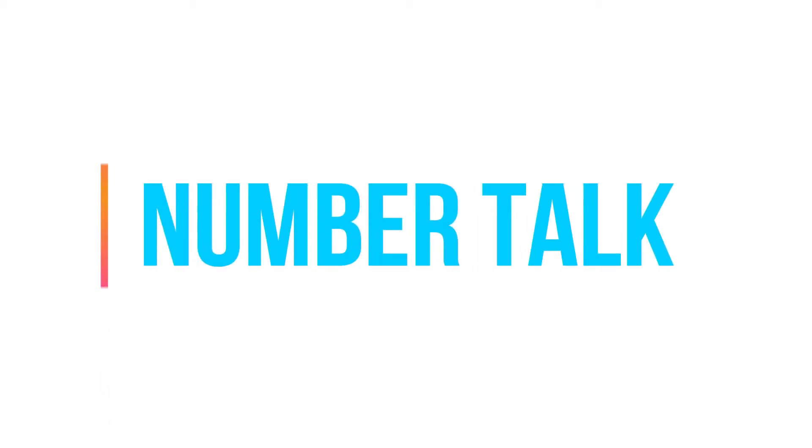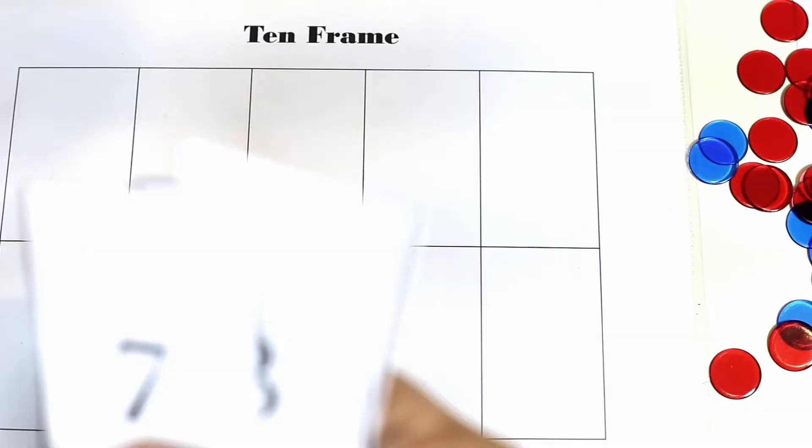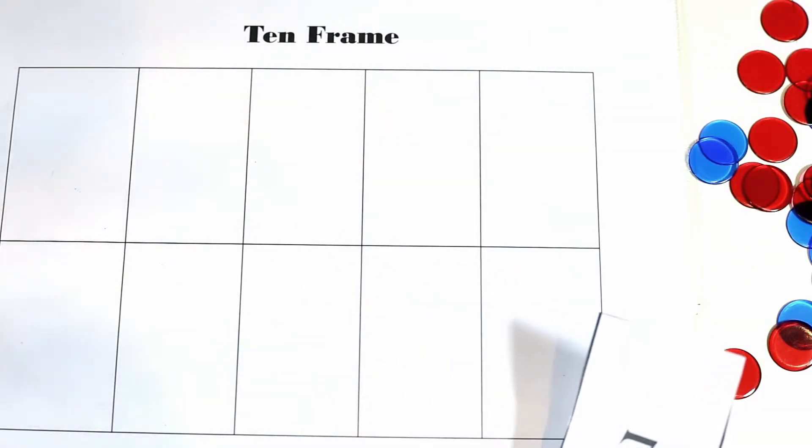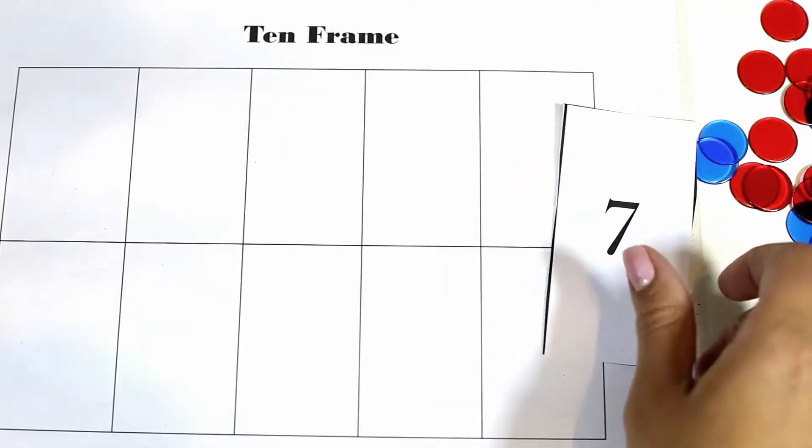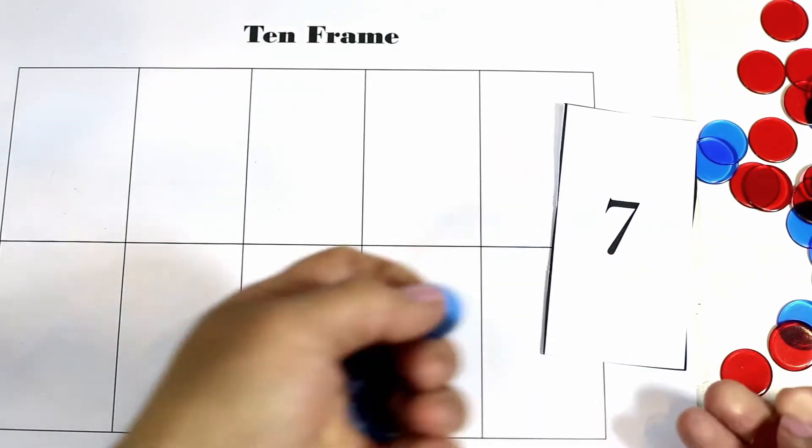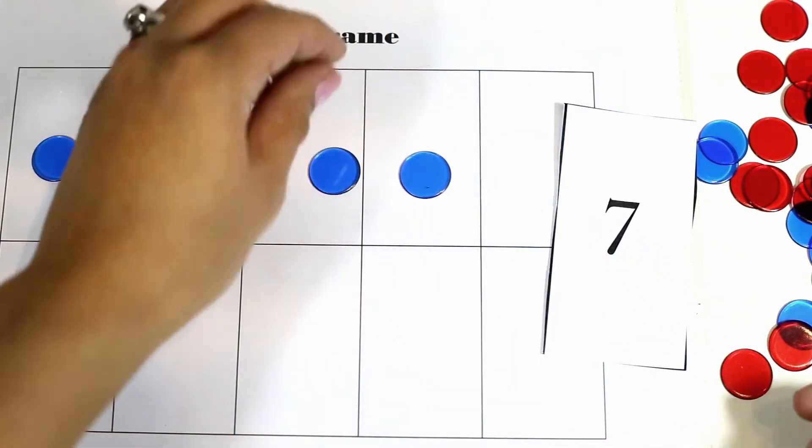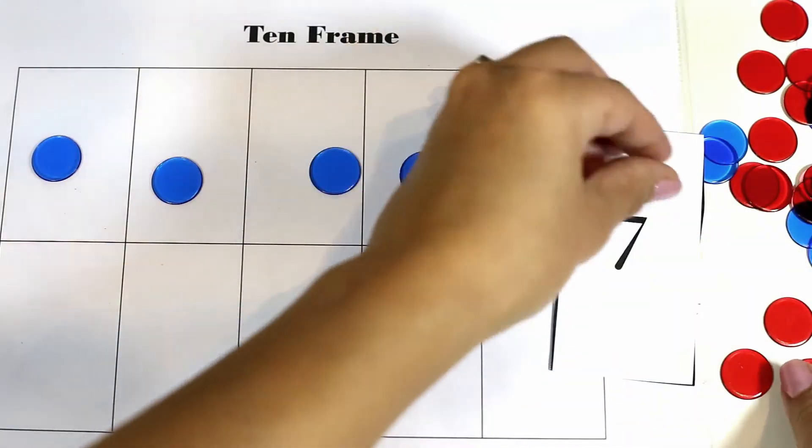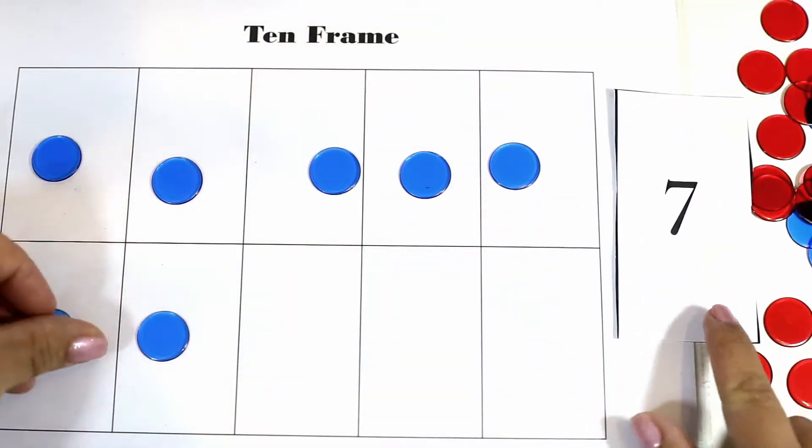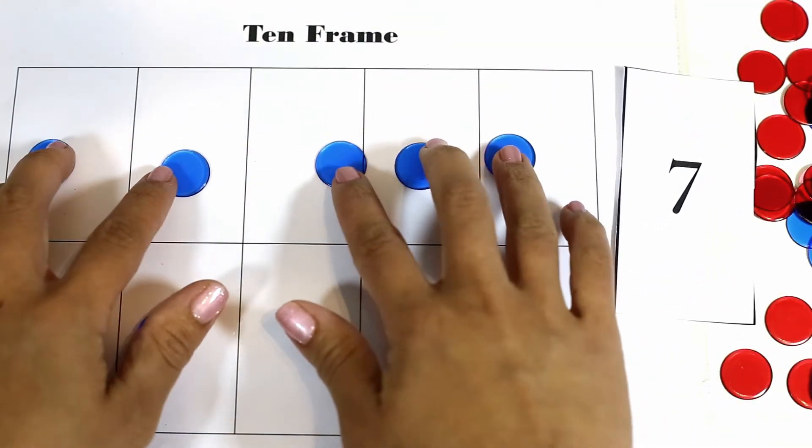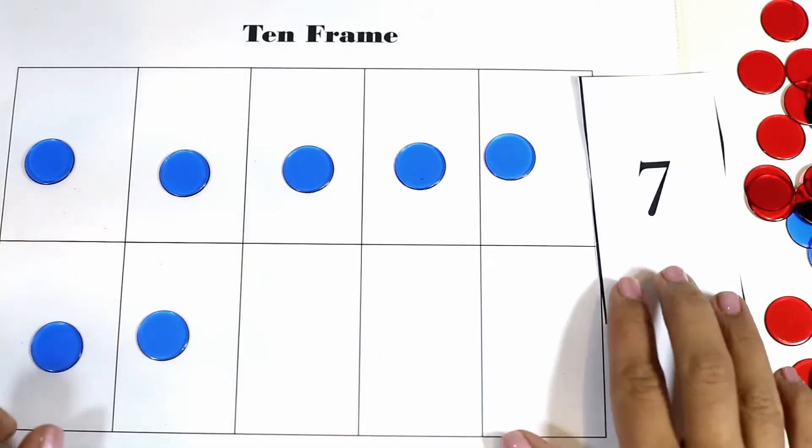The next activity is what I like to call number tops. And basically a number top is trying to figure out different ways to make a number. So say for example we have the number seven and I'm just going to put down seven counters: five, six, seven.